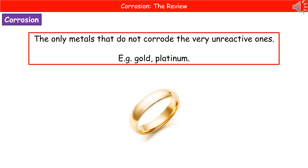What we find is there are very few metals that don't corrode, and in fact the only metals that do not corrode are the very unreactive ones, which are things like gold and platinum. These are the ones we tend to use in jewellery more often than not, because you don't really want to spend a fortune on a really nice ring only to have it corrode within a few years.